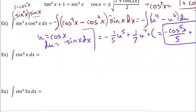Because sine had an odd exponent and cosine had an even exponent, I picked cosine to be the u. I took out a sine squared so that I had one sine left over, because anytime we're dealing with sine and cosine, we need a remaining one — either sine or cosine — as part of the du.